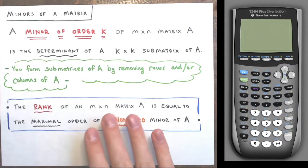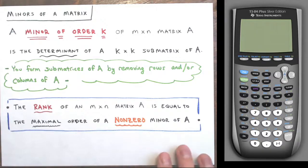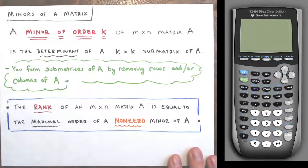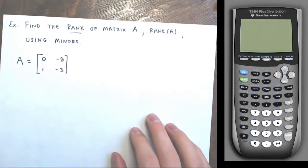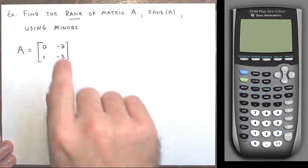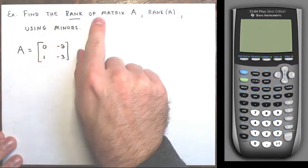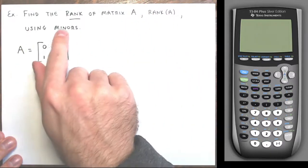It sounds maybe a little weird but we'll get into some examples. The rest of this video is going over examples of matrices and finding the rank of the matrix using minors.